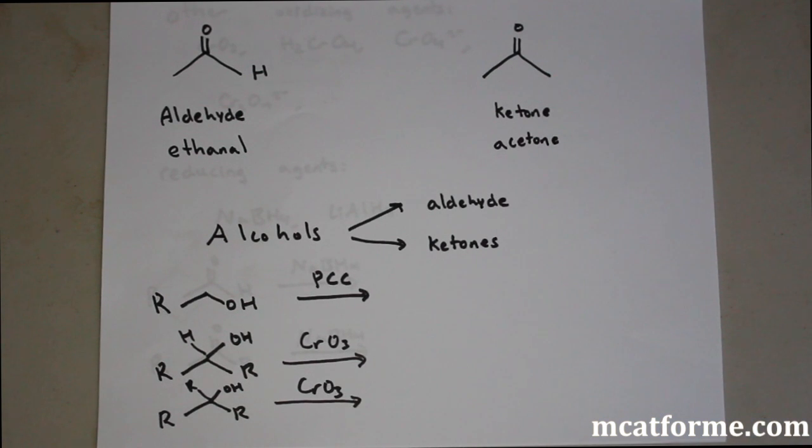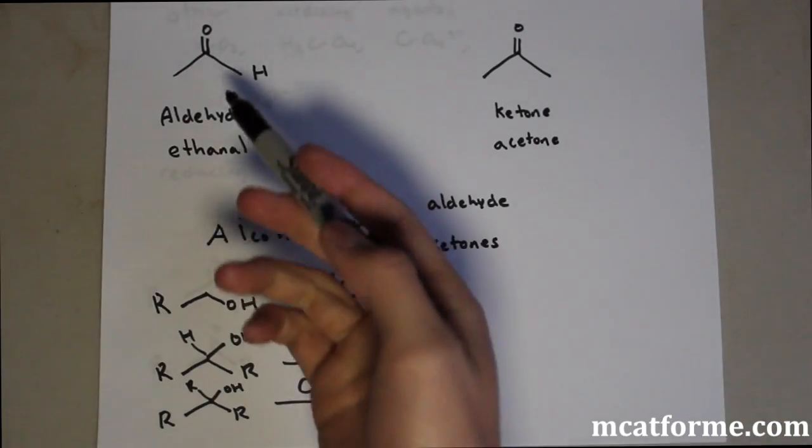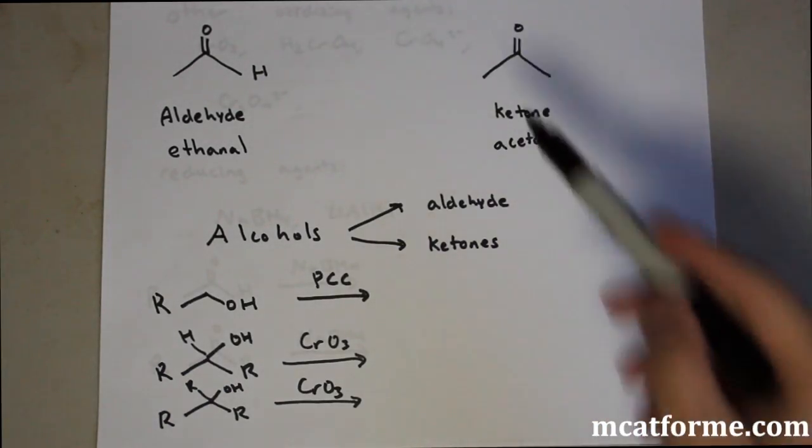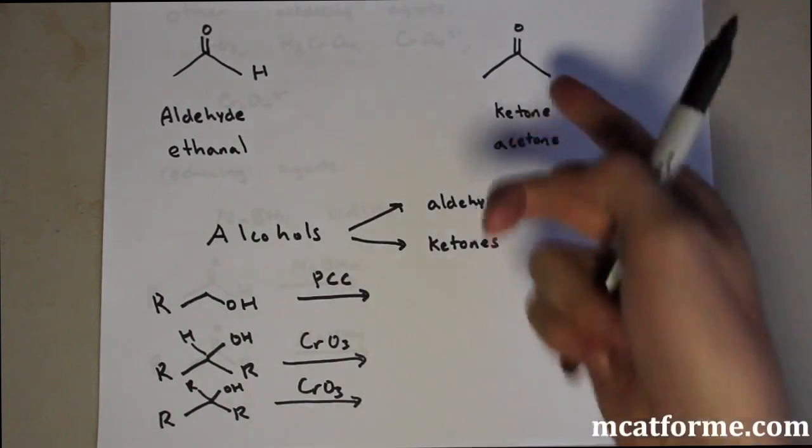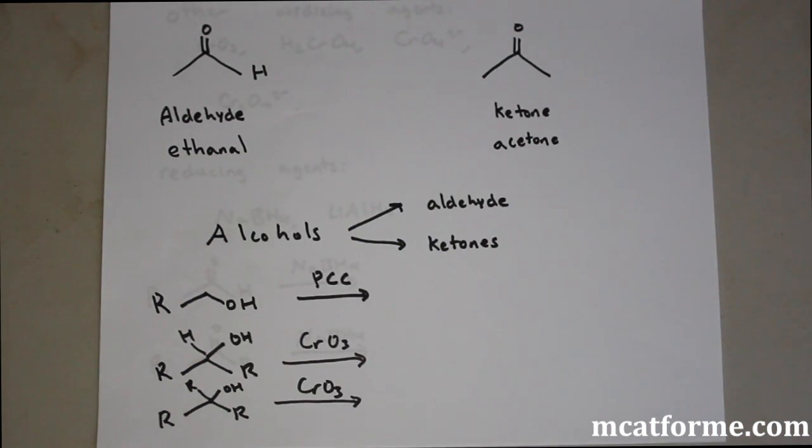Today we're going to be looking at aldehydes and ketones, a pretty important part of the MCAT. Aldehydes look something like this - we have an H attached to the carbonyl carbon. Ketones will have two carbons attached to that carbonyl carbon. The difference is this H right there.